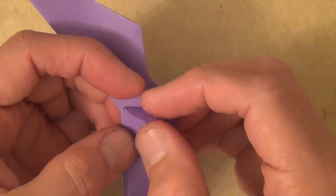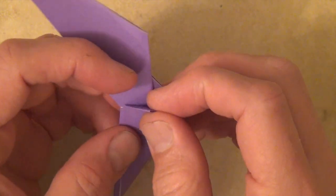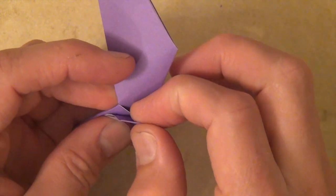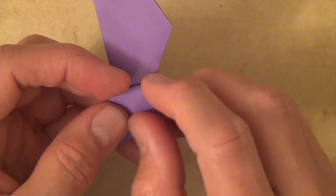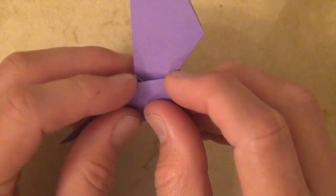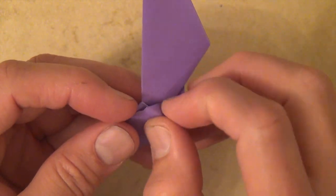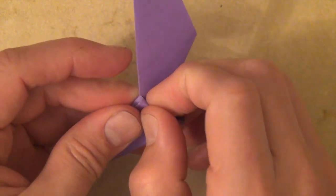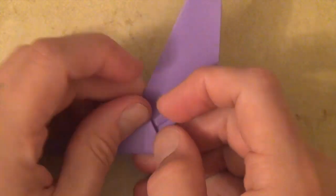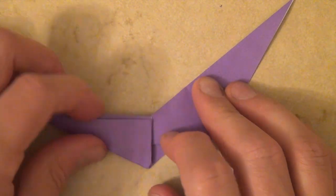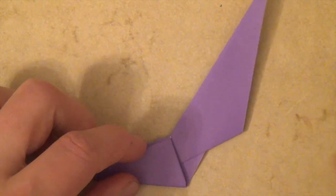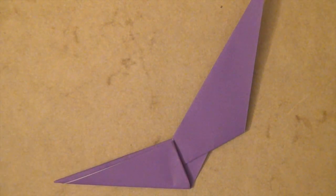And now we're going to take this triangular flap and bring it up. And we're going to tuck it into the pocket. And since it's a smaller flap, it's just a little bit easier to tuck into the pocket. Like that. And we are done with the first module. So now you need to repeat that two more times.